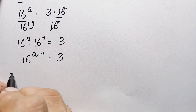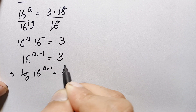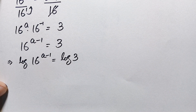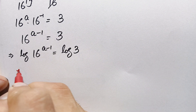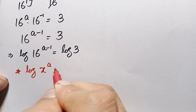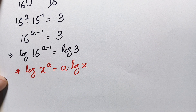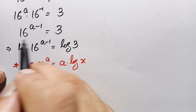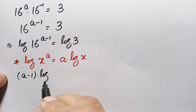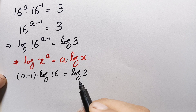Here we take the common log on both sides: log of 16 raised to power (a minus 1) equals log of 3. On the left hand side we use the logarithm property: log of x raised to power a equals a times log of x. Using this property, we move the power (a minus 1) to the front: (a minus 1) times log of 16 equals log of 3.